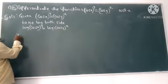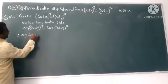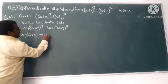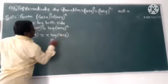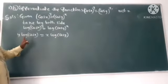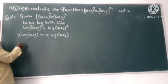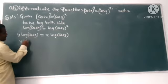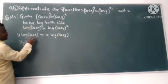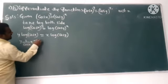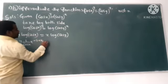This becomes y log(cos x) = x log(cos y). Now we differentiate. What is the formula? You already know: differentiation of log(cos x) is -sin x / cos x.